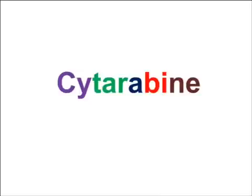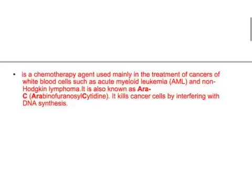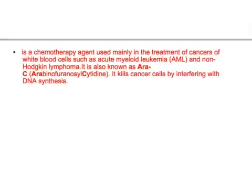Hi friends, welcome back to USMLE team. Today's topic is the drug Cytarabine (Cytorobine). Cytarabine is an important drug for your USMLE Step 1 pharmacology. It is a chemotherapy agent used mainly in the treatment of cancers of white blood cells, such as acute myeloid leukemia or non-Hodgkin's lymphoma. It is also known as Ara-C, or arabinofuranosylcytosine, and it kills cancer cells by interfering with DNA synthesis.